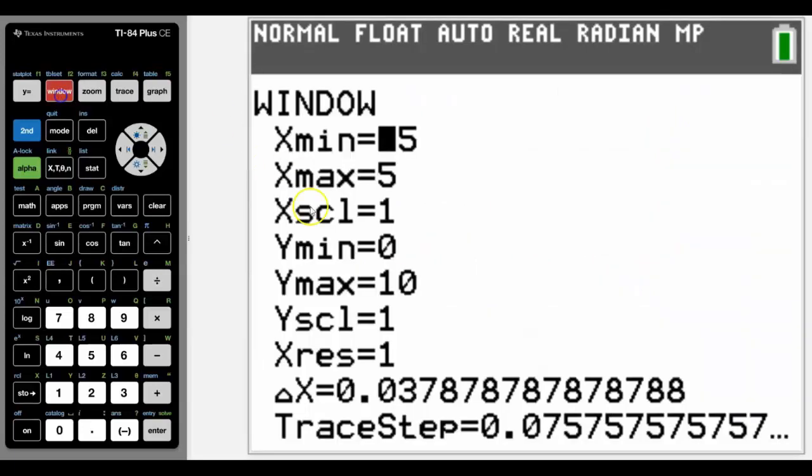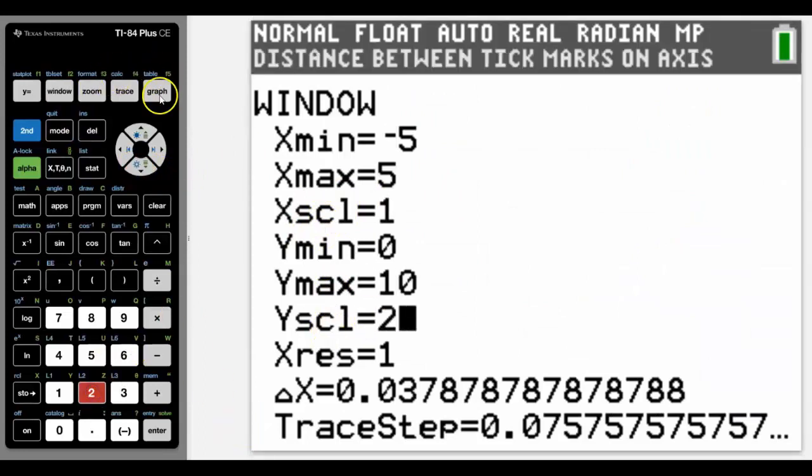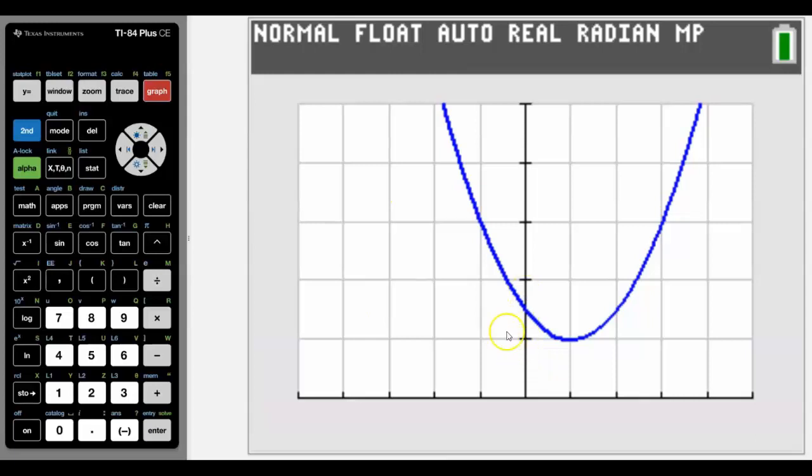And these grid lines are controlled by the X and Y scale. If I change that Y scale to say two, then it will give me a bar every two rather than every one. So just bear in mind that the X scale and Y scale control the grid lines.